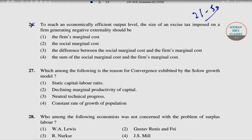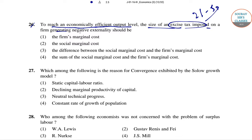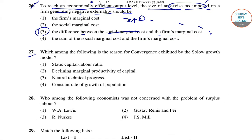Question 26: To reach an economically efficient output level, the size of an excise tax imposed on a firm generating negative externality should equal the marginal damage, which is the difference between social marginal cost and the firm's marginal cost. So the right answer for question 26 is option 3.